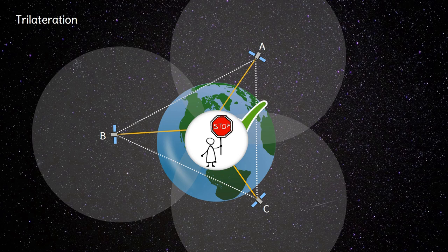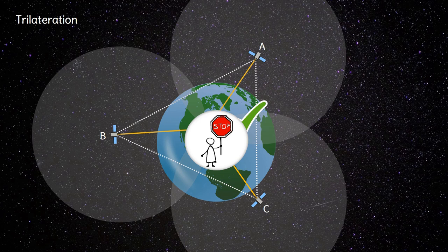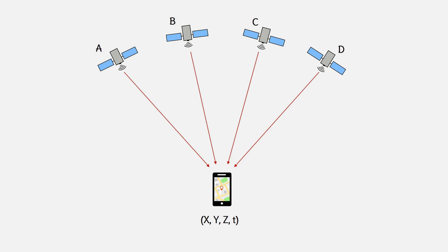Wait a moment. We said that the user's equipment should see at least three satellites to determine its position. However, it turns out that the receiver's clocks are not nearly as accurate as the clocks on board the satellites. So the receiver's time also is considered unknown. This means that there must be at least four satellites in view to solve the system of equations and provide the user's coordinates and time.